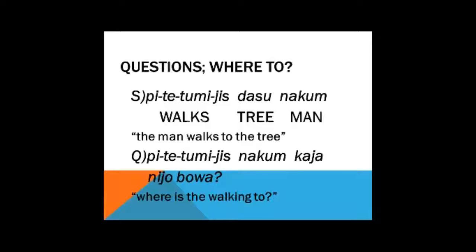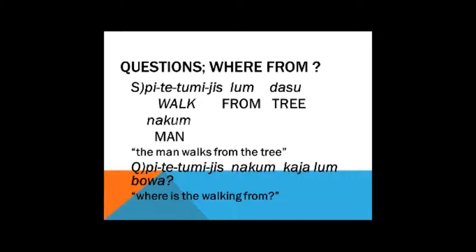Let's change the orientation of the movement and talk about where he's walking from. The man walks from the tree. I don't know that it's from the tree, so that information is omitted from the question. I have at the end kaya lumbawa — where from — and say: pita yi alum yisna kum kaya lumbawa, where is the man walking from?